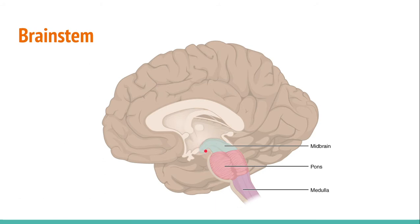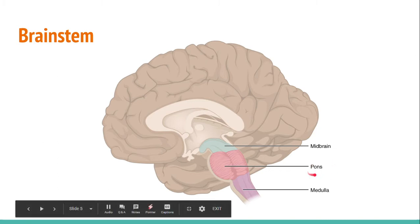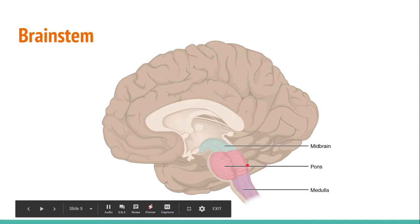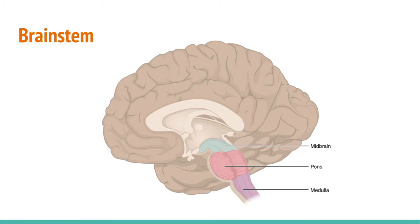This pathway helps deliver fibers that are really important for voluntary motor functions — movements that are directly performed by you. Another part of the brainstem is the pons, which is involved with motor control, sensory analysis, and information that comes through the ear and enters the brain at the pons. The pons are also important for level of consciousness, sleep, movement, and posture.